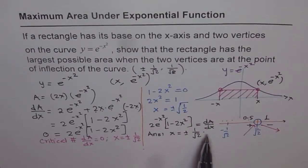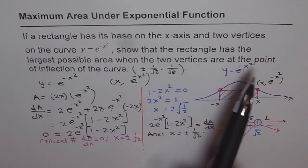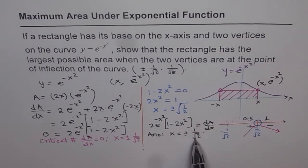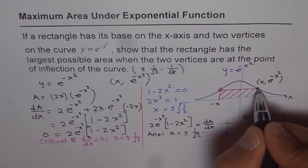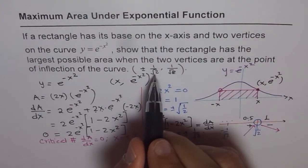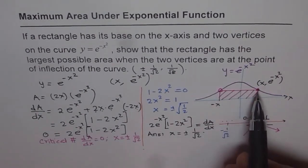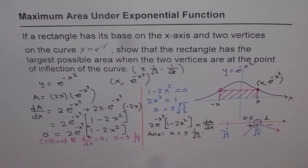The second and important part of this is to show that the rectangle has its largest possible area when the two vertices are at the point of inflection. Whether x equals plus or minus 1 over square root of 2 is indeed a point of inflection has already been covered in another video. Combining both videos, we know that the points of inflection are exactly the points at which the rectangle's vertices should be placed for maximum area. Thank you and all the best.